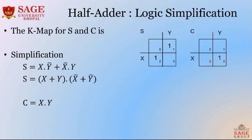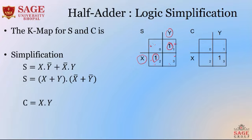We can represent this in terms of a k-map. In the k-map, this column is y and this row is x. In these two blocks x is 1, in these two blocks x is 0. Similarly, in these two blocks y is 1 and in these two blocks y is 0. When y is 1 but x is 0, the sum is 1. When x is 1 and y is 0, the sum is 1. But when x and y are both 0 or both 1, we don't get any output. This is the k-map for the function s.